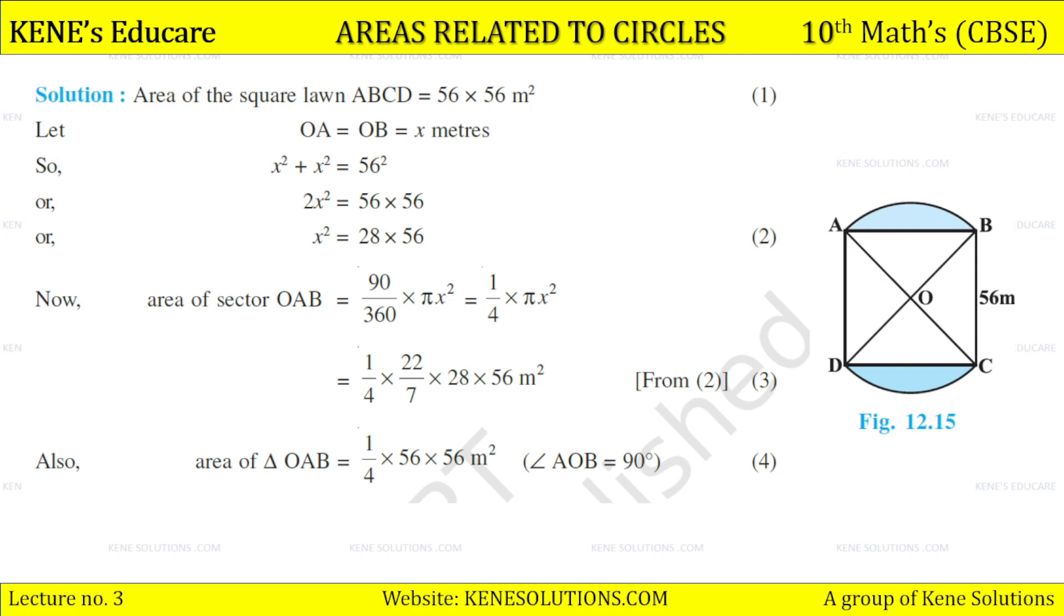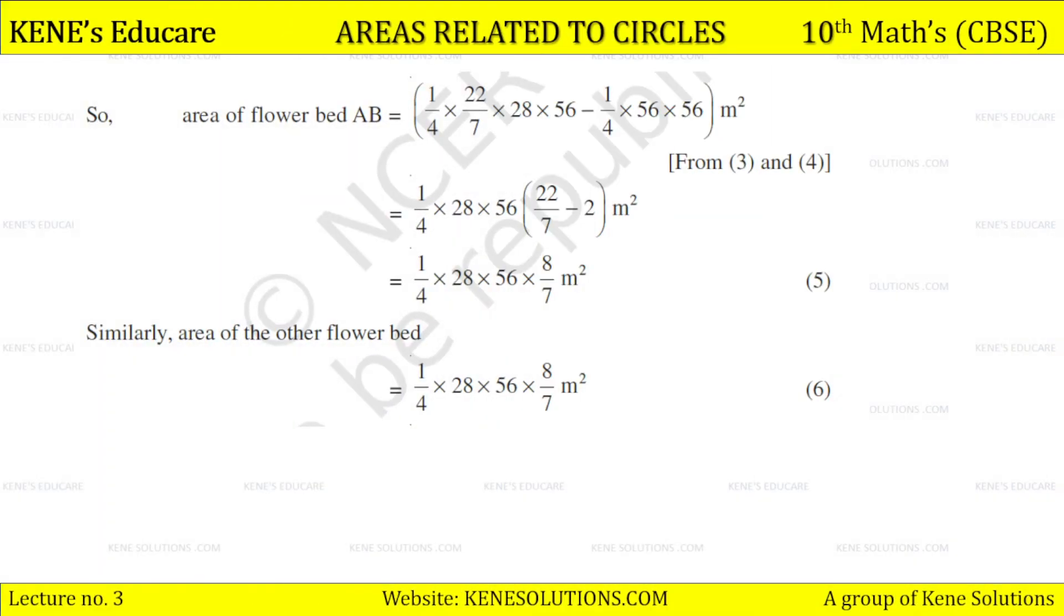The value of x² is 28 × 56, so we get area of triangle OAB. OAB here, how much? 1/4 × 56 × 56. So area of flower bed AB is equal to 1/4 × 22/7 × 28 × 56 minus 1/4 × 56 × 56.